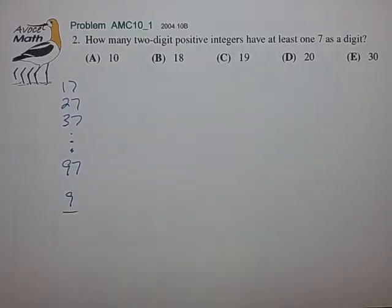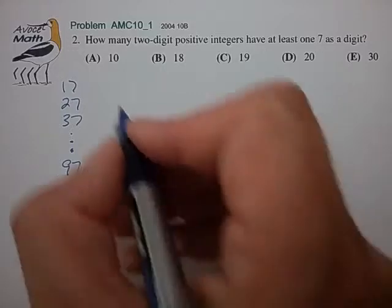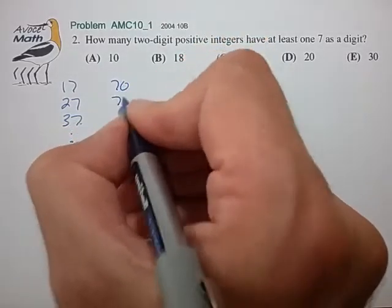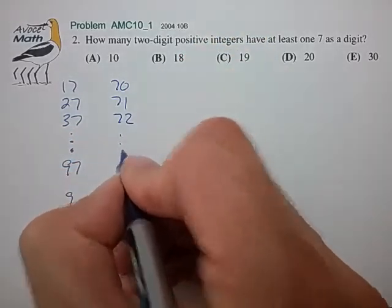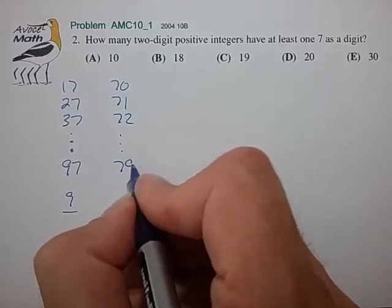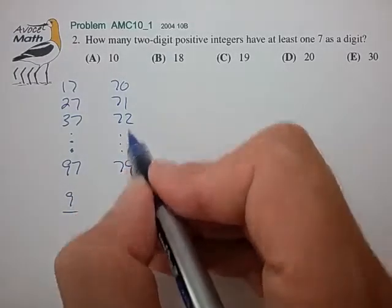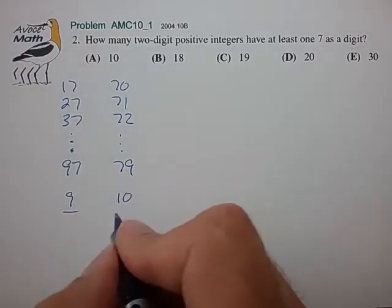And now let's count up the two-digit numbers with the 7 as a tens digit as being 70, 71, 72, up to and including 79 for a total of 0, 1, 2, 3, 4, 5, 6, 7, 8, 9, 10 values.